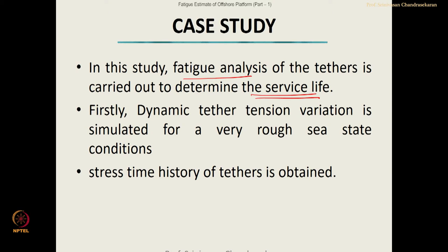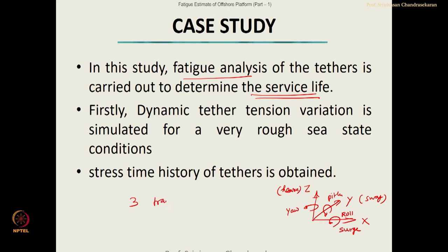There are 3 translations and 3 rotations. Displacement along x is surge, along y is sway, along z is heave, rotation about x is roll, rotation about y is pitch, and rotation about z is yaw. Please note: the translational degrees of freedom — surge, sway, and heave — will be transferred from the buoyant leg to the deck. Whereas the rotational degrees — roll, pitch, and yaw — will not be transferred from the buoyant leg to the deck.